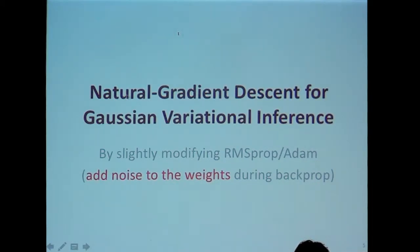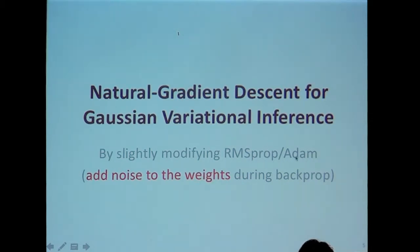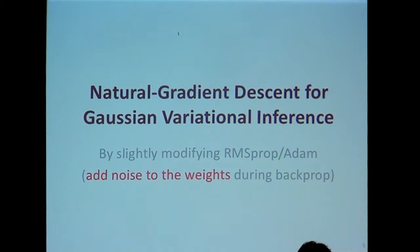I'll talk about an approximate way to do natural gradient descent to obtain a Gaussian approximation for variational inference. What you'll see in the end is that you take standard deep learning optimizers and make a small modification: you add some noise to the network weights during backpropagation, and that allows you to perform natural gradient variational inference approximately.